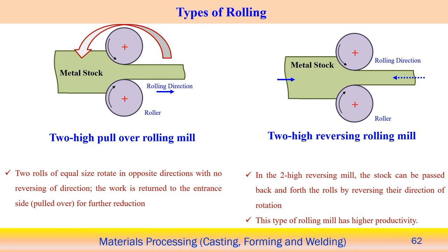Now we look at the types of rolling mills, based on the arrangement of rolls and their capability to take load during deformation. One type is the two-high pullover rolling mill. In this case, two rollers of equal size rotate in opposite directions with no reversing of direction, and the work must be fed from the entrance side for further reduction.